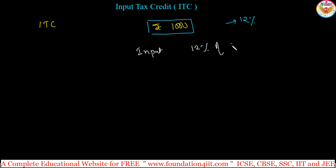12% of 1000, so 12 divided by 100 into 1000, it is obviously 120. So 120 rupees is the input tax.